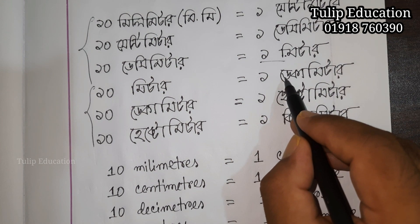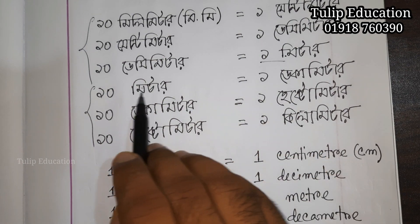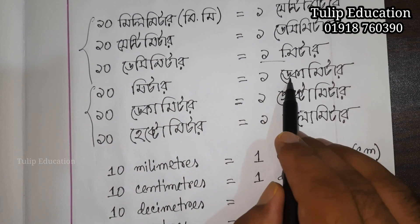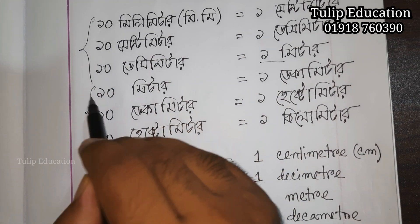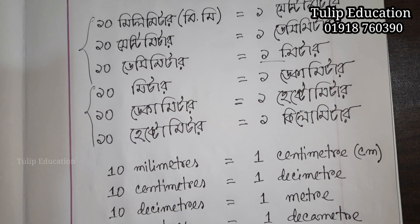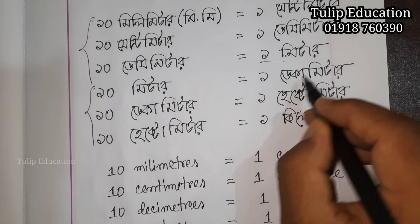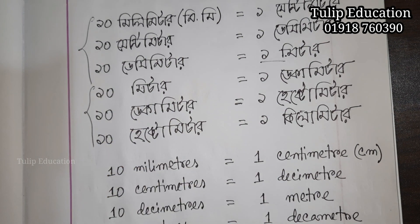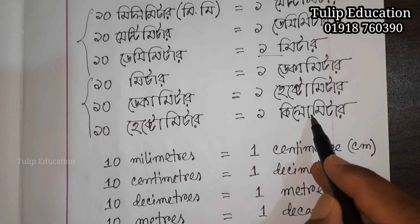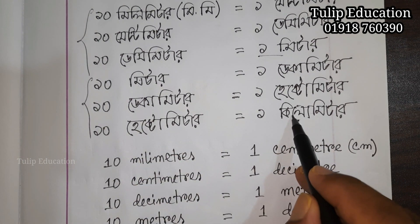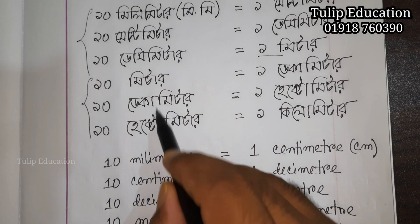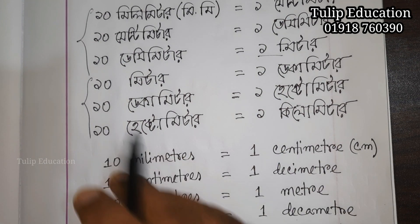Now with 10, we already have 10 decimetres, which signs up 100 decimetres — the same as one decimetre. So you can watch this workshop. We are going to do this very good calculation.